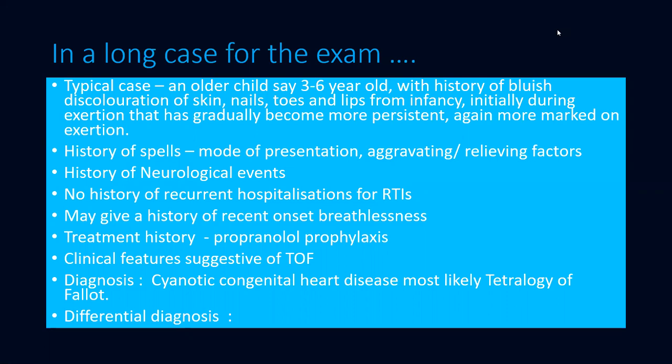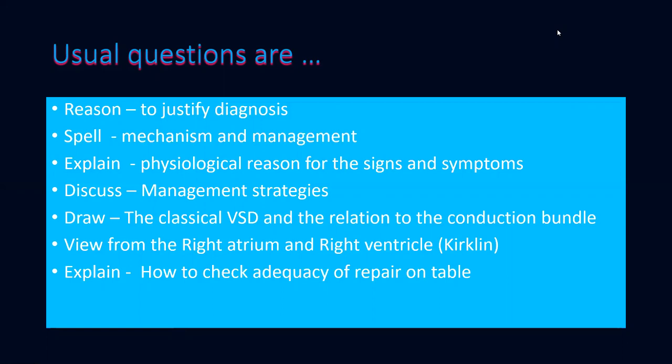You make a diagnosis saying it is a cyanotic congenital heart disease, most likely Tetralogy of Fallot. Then you're asked about differential diagnosis, questions like the reason for your diagnosis, can you justify it, the mechanism and management of a spell, the physiological reason for signs and symptoms, the investigations, and management strategies. If you've done fairly well, they'll ask you to draw the classical VSD, the conduction bundle, the view from the right atrium, the right ventricle, and the Sano and Kirklin repairs, and how you check for adequacy of repair on the table.